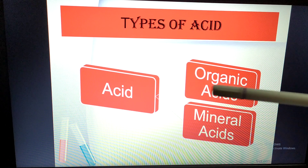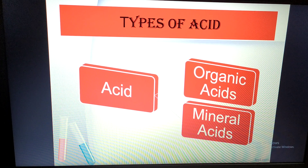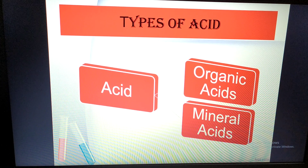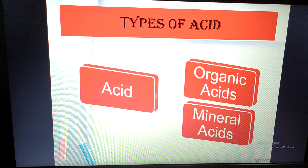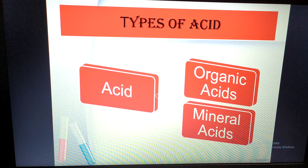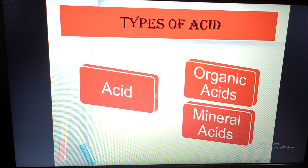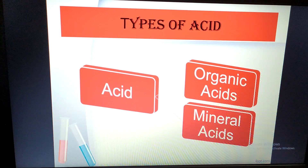Acids are divided into two types: organic acid and mineral acid. Organic acids are those we can get from foods. Mineral acids are found in our environment and surroundings. Examples of mineral acids include hydrochloric acid, sulfuric acid, nitric acid, and perchloric acid. Organic acids include citric acid, malic acid, tartaric acid, oxalic acid, and acetic acid. So there are two types of acid: organic and mineral.